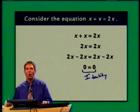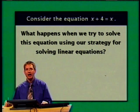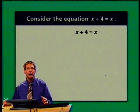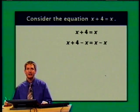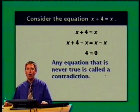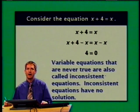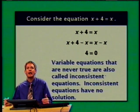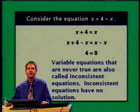Now let's go back to x plus 4 equals x and apply our solving strategy. We subtract x from both sides and get 4 equals 0. The equation 4 equals 0 is called a contradiction — it's simply false. Any equation that is never true is called a contradiction. Variable equations that are never true are also called inconsistent equations, and inconsistent equations have no solution. If your original equation is equivalent to a contradiction involving two numbers, that's a clear sign you have an inconsistent equation.